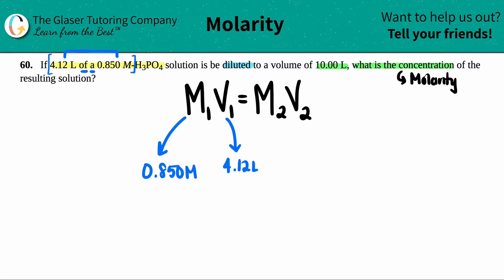Okay, now I just got to find the other pair. My one other molarity and my volume. Well, we're diluting it to 10 liters. That's a volume. So I know that on this side, the volume would be 10.00 liters.